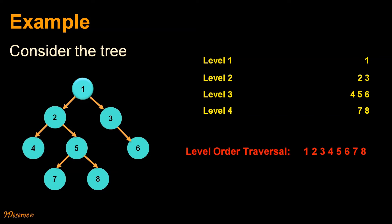So level order traversal for this tree would be 1, 2, 3, 4, 5, 6, 7, 8.